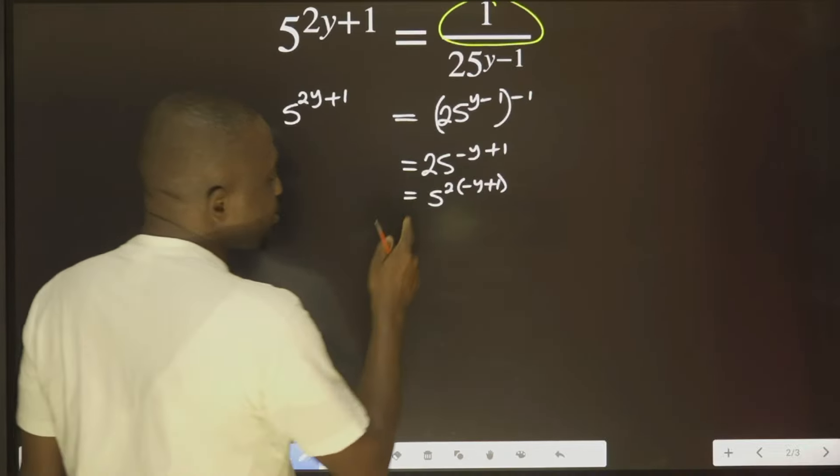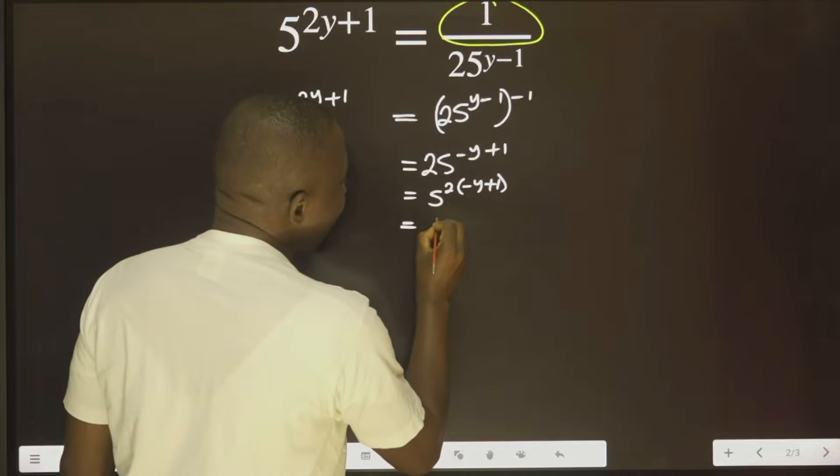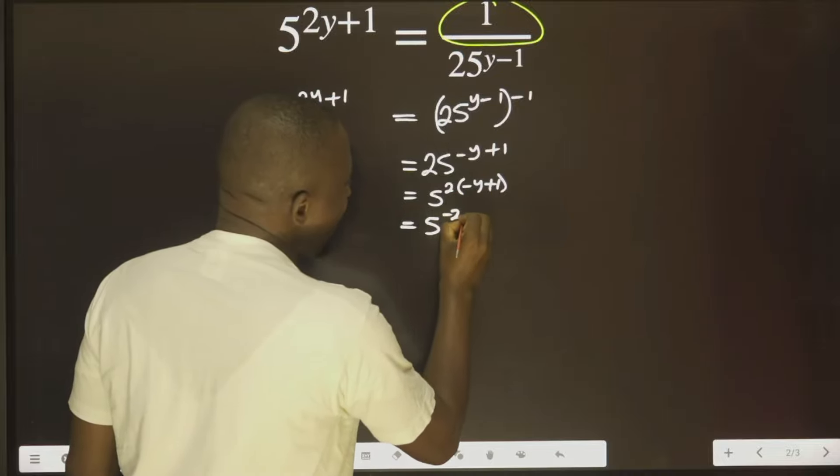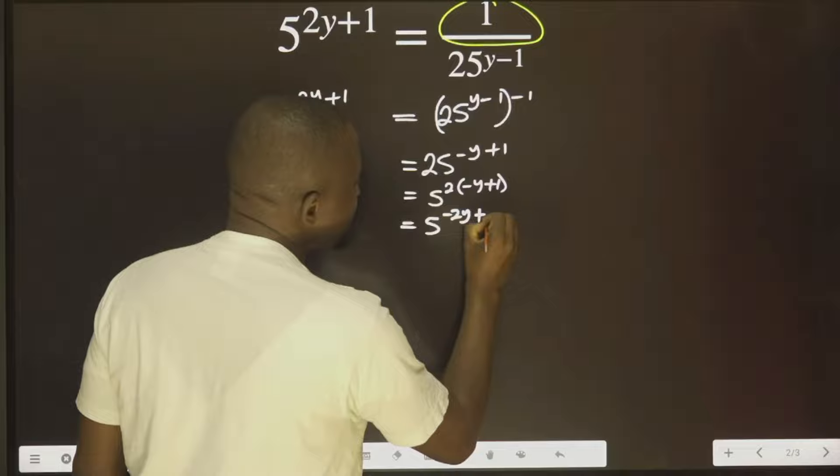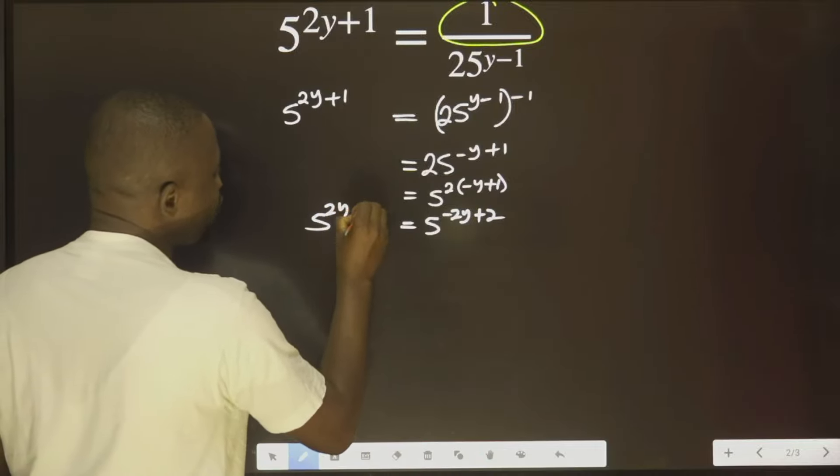The next thing I need to do is work on this. 2 multiplied by this gives us 2y, this will give us plus 2. Then I will write this down: 2y plus 1.